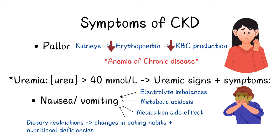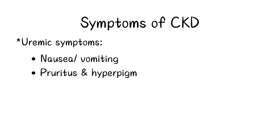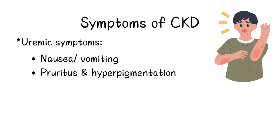Uremic toxins can deposit on the surface of the skin and irritate it, causing pruritus and hyperpigmentation.